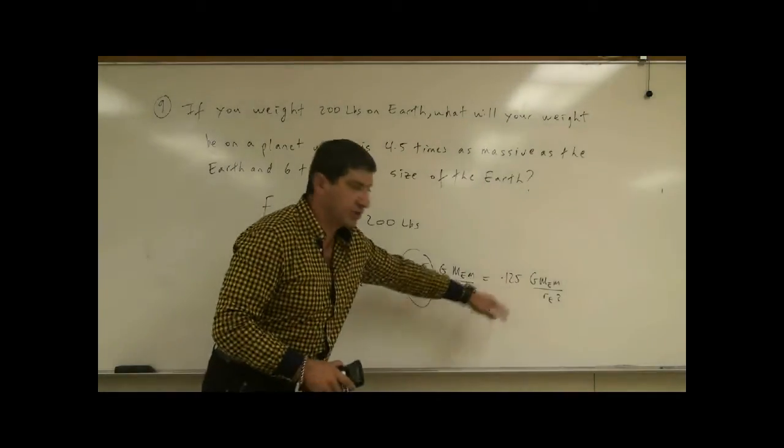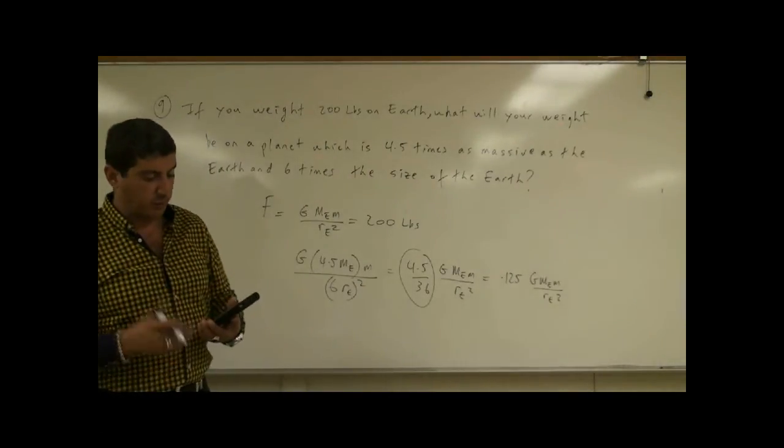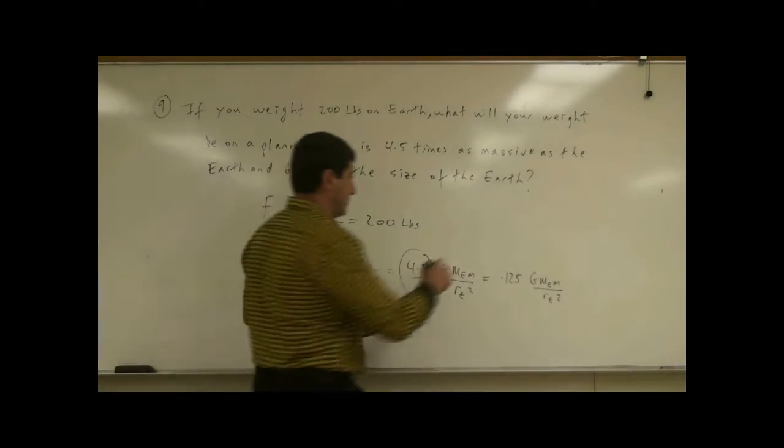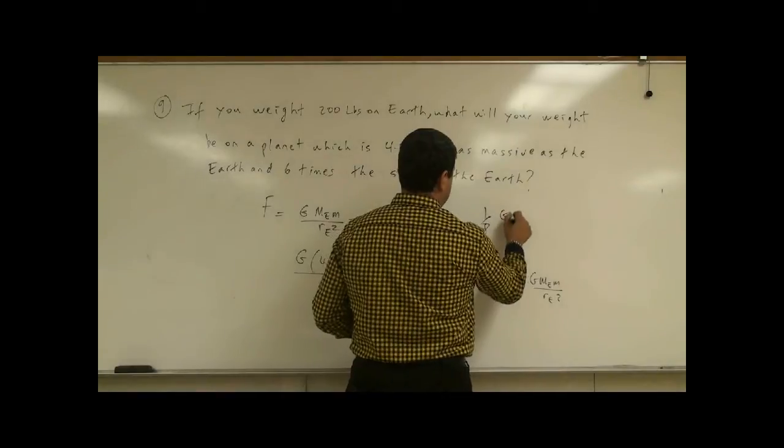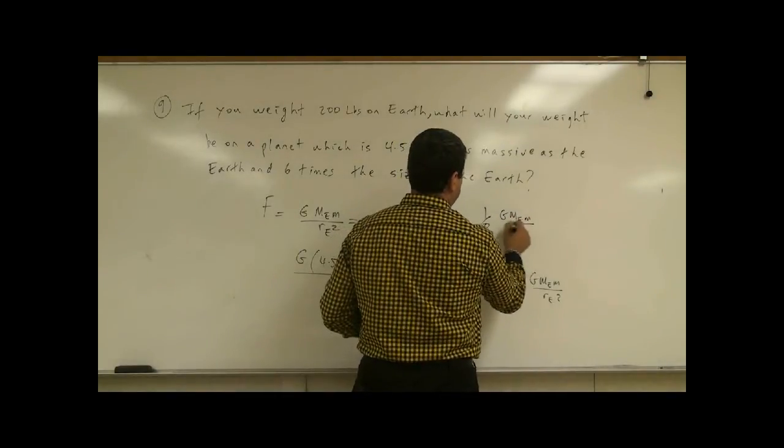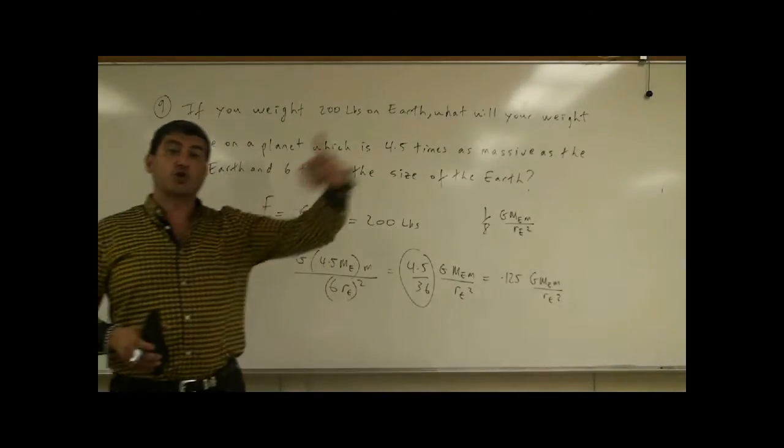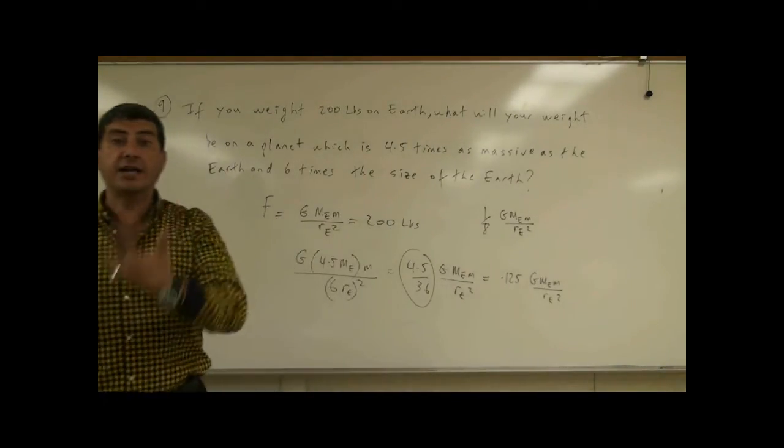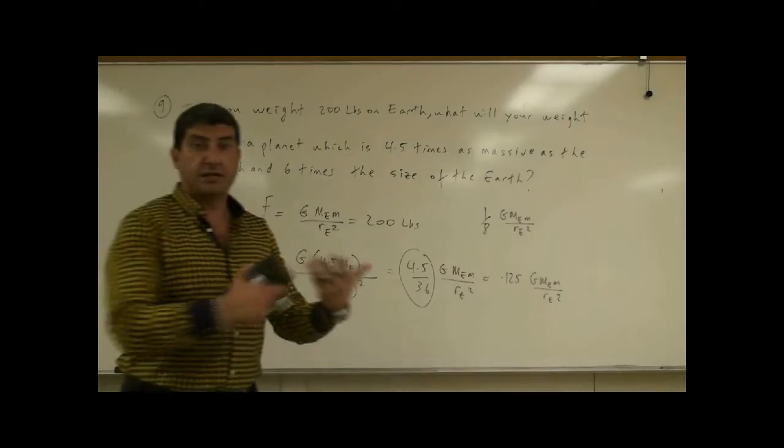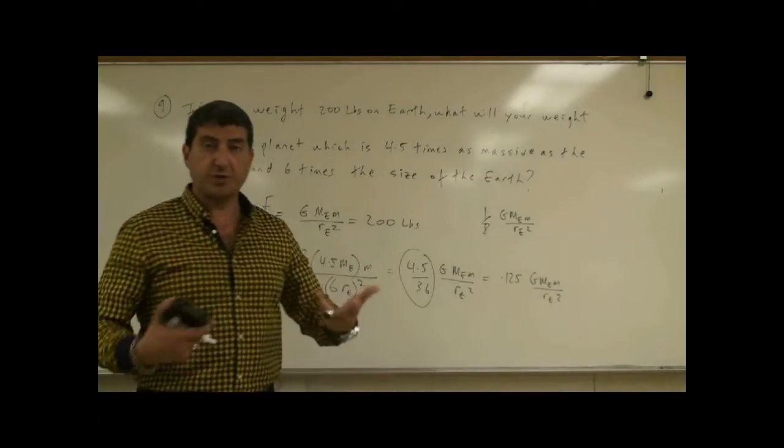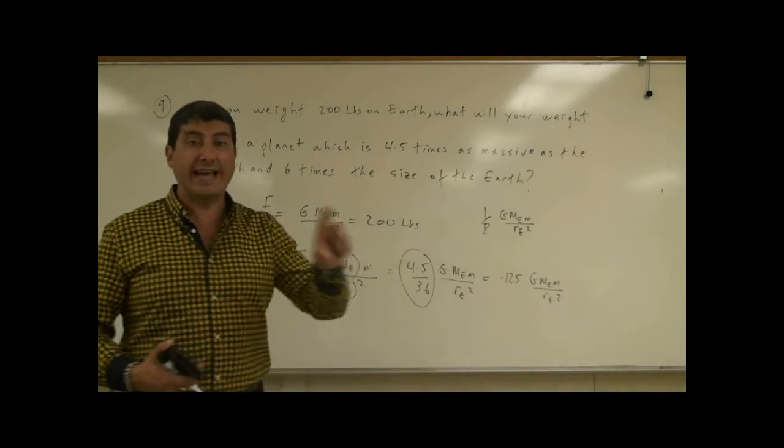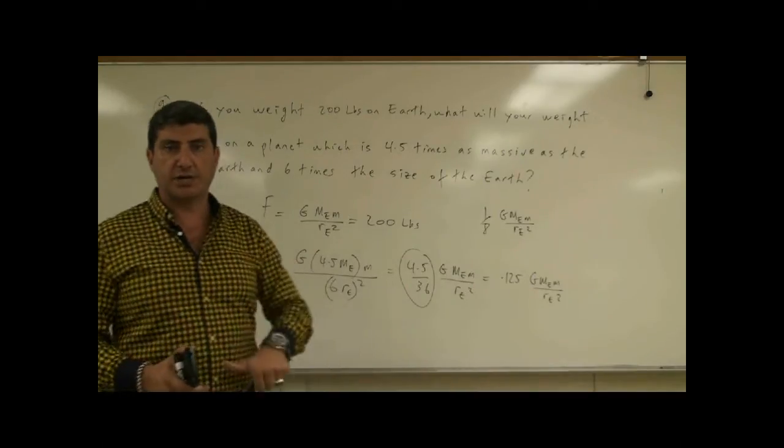0.125 in terms of a fraction is the ratio one-eighth. If you change this to a fraction, it's going to be 1 over 8 is 0.125. One-eighth G M_E M over R_E squared. What that means is that whoever goes to that planet will weigh eight times less than they do here on Earth. Or the other way to say it is they will weigh one-eighth of what they weigh here on Earth.